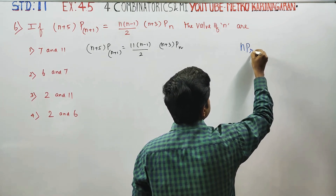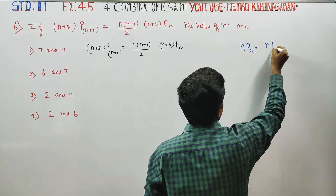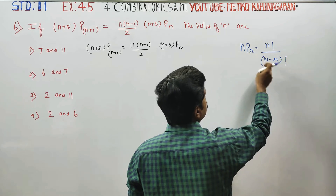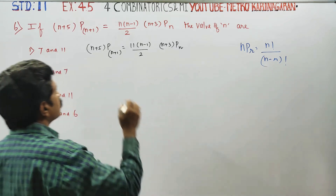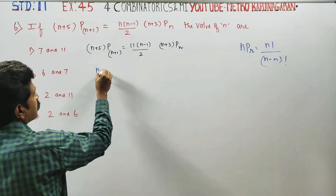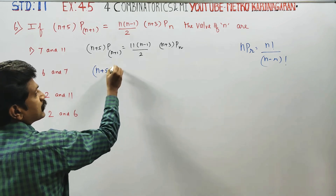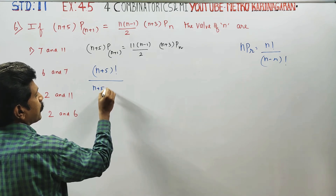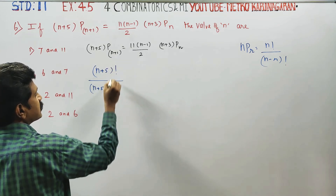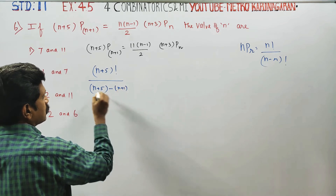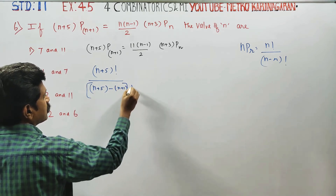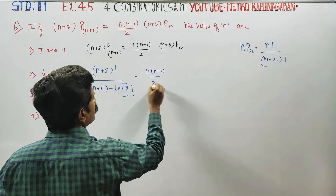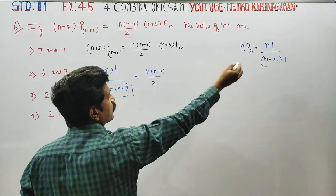What is the nPr formula? nPr equals n factorial by n minus r factorial. n plus 5 is the difference. n plus 5 minus n plus 1 factorial — that is n minus r factorial. Then 11 into n minus 1 by 2. That is the formula we use.